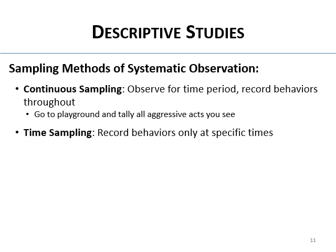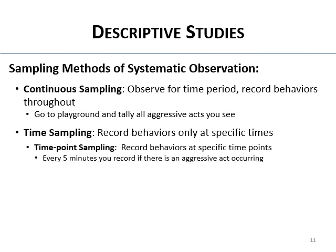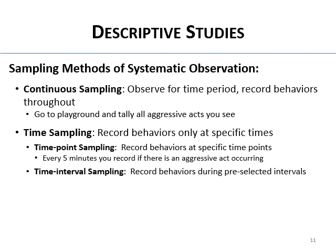Time sampling means recording behaviors only at specific times. Time point sampling means recording at specific time points — for example, every five minutes you look up and record whether there's an aggressive act happening at the playground. Time interval sampling is a twist on that: you record behaviors during pre-selected intervals, such as for the first five minutes of every half hour — an interval, not just a single point.